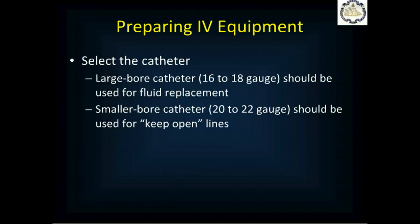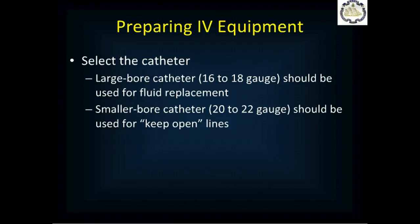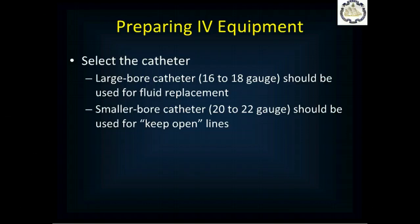Select the right size catheter. A large-bore catheter, 16 to 18 gauge, is used for fluid replacement and resuscitation. While 14 gauge catheters are available, once you hit 18 gauge your diameter is big enough for adequate resuscitation — 16 gauge is pushing it and 14 you never need. You can use a smaller-bore 20 or 22 gauge catheter for a line just there for medications or maintenance fluids. A 20 gauge is a nice compromise because you can still do adequate resuscitation through it if needed.